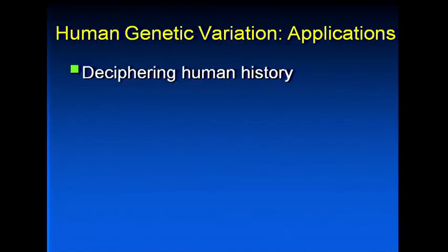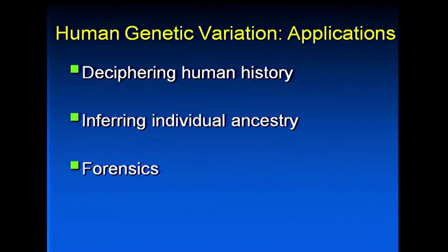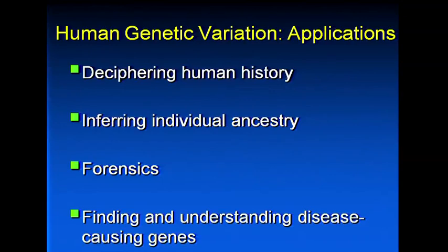There are several areas in which human genetic variation can be applied. First, we use it to decipher human history. We can infer individual ancestry. We use it in forensic applications — more than 25,000 criminal cases each year in the United States now involve forensic DNA evidence. And finally, here at NIH, perhaps the most important application is finding and understanding disease-causing genes, and how our studies of population genetics help us to do that.